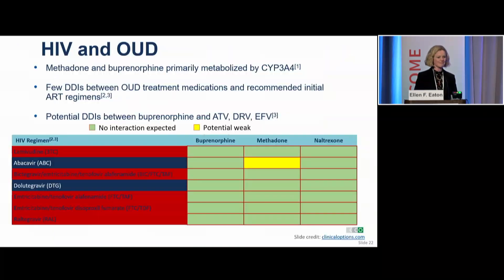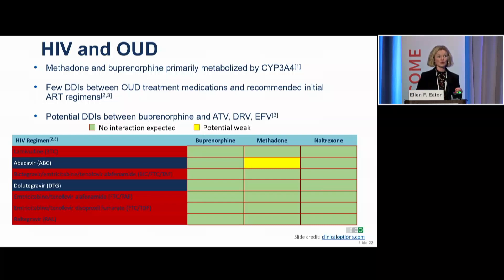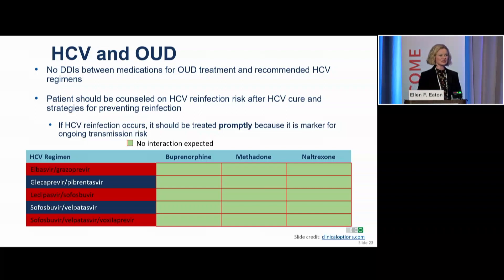There are few drug-drug interactions between OUD treatment medications and recommended initial ART regimens. There is a potential interaction between buprenorphine and some older ART regimens, and a potential weak interaction between methadone and abacavir. But I want you to leave here knowing that you can and should be referring your patients on ARTs to medications for opioid use disorder. Buprenorphine will be the most accessible, with very few drug-drug interactions. For hepatitis C, which is very common in this patient population, there are no drug-drug interactions between OUD treatment medications and recommended hep C regimens.